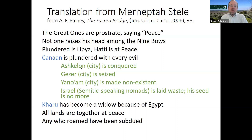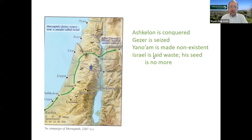For Israel to have been destroyed, Israel must necessarily have been in the land of Israel, along with Ashkelon, Gezer, and Yenoam. In 1207 BCE, Merneptah conquers the land of Israel, captures these cities, and fights against a group of Semitic-speaking nomads called Israel. Some of his claims we can dismiss as bluster, but historically there is a group called Israel — he didn't make it up. Where might that group have been located?